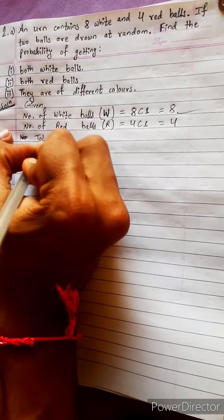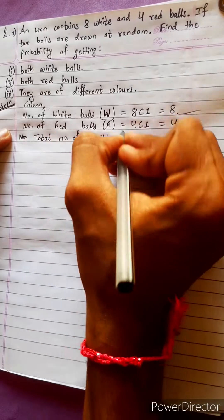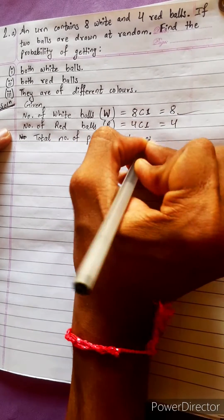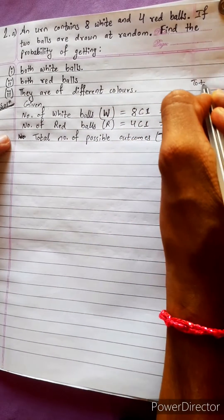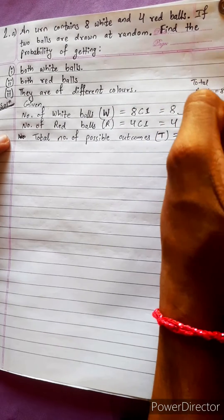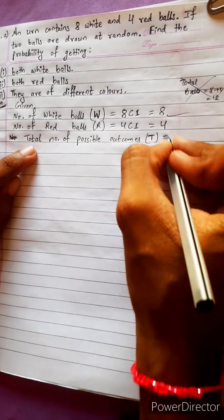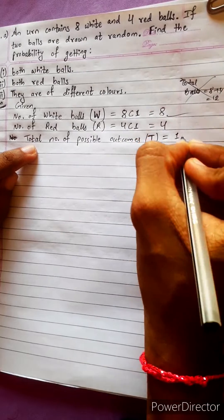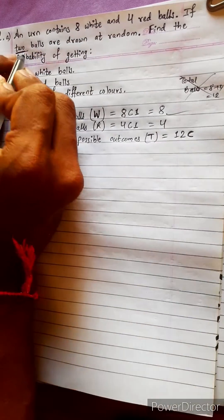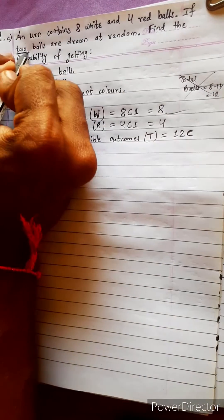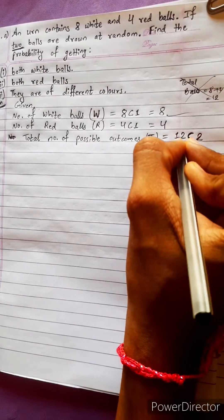Now, total number of possible outcomes: total balls equals 8 plus 4 equals 12. It is not telling us total number of balls — it is telling total number of outcomes. Since two balls are drawn at random simultaneously, the result will be 12 combined with 2, giving us 12C2.